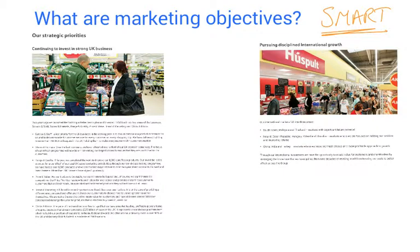Tesco doesn't actually publish its specific SMART objectives, but it does publish its strategic priorities in two main ways: firstly on the UK business and secondly on international growth. The international growth one has been scaled back recently, which we will look at later. For now, let's look at the UK ones.